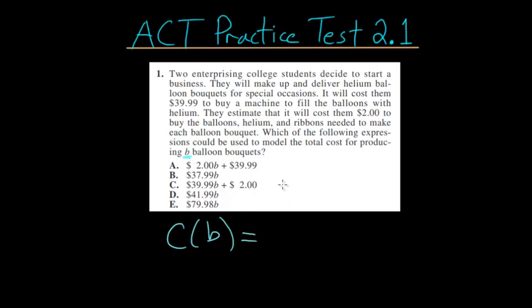So this would be equal to... We know that we have to spend $39.99 to just buy the machine. But it looks like once we spend that, we won't have to spend that again. So we can call that a fixed cost.